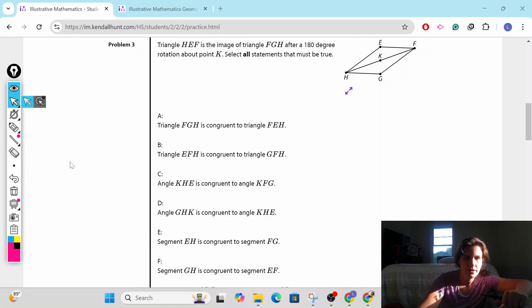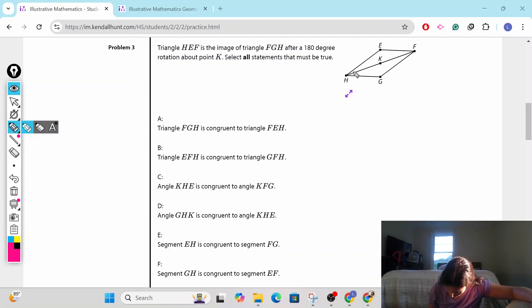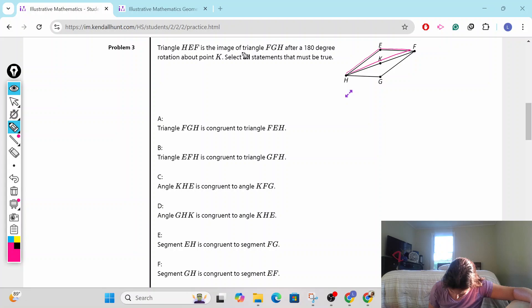Problem number three. Triangle HEF is the image of triangle FGH after 180 degree rotation around point K. So he just flipped and went all the way around. Select all the statements that must be true. Triangle FGH is congruent to triangle HEF. This guy and that guy. Yeah, he's a rotation. Same triangle, flipped around. It means they're congruent.